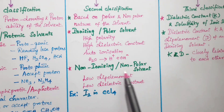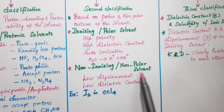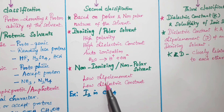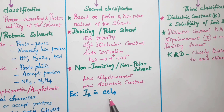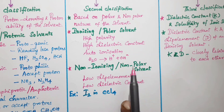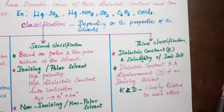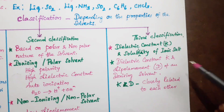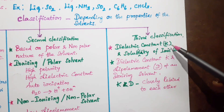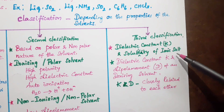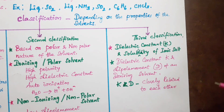Non-ionizing, non-polar solvents have a low dipole moment and low dielectric constant value. Examples include iodine and carbon tetrachloride. This completes the second classification.